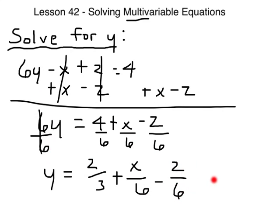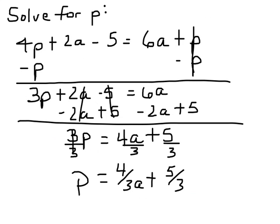And we can reduce 4/6 to 2/3 plus x over 6 minus z over 6. And that is how you solve a multi-variable equation. Let's look at another one. Alright, this has two variables, p and a, and it says we're going to solve for p.